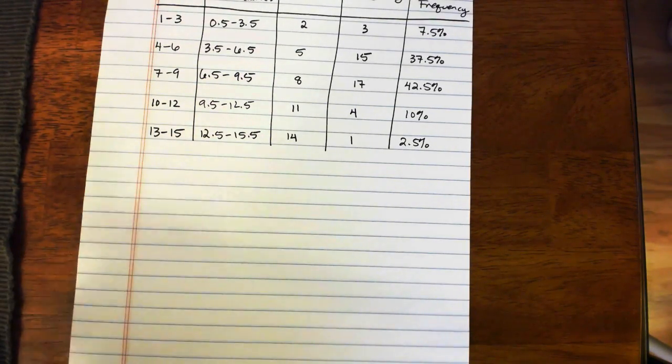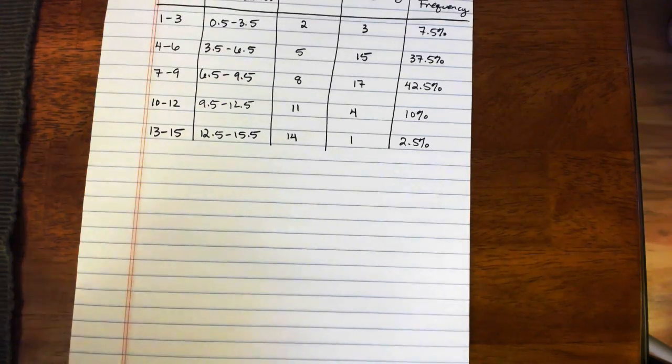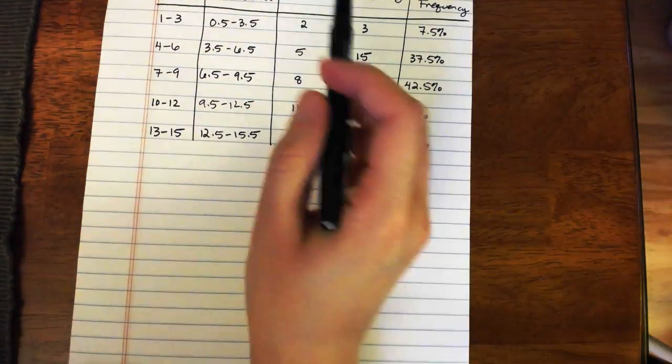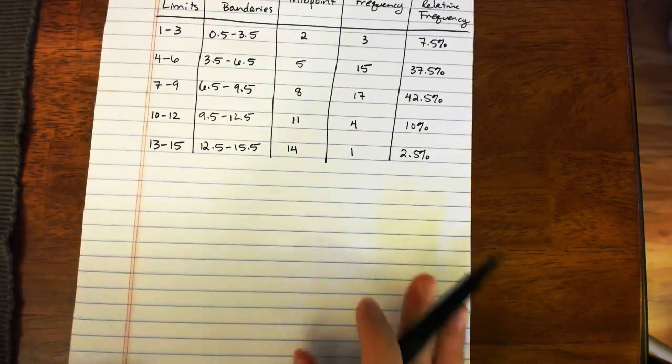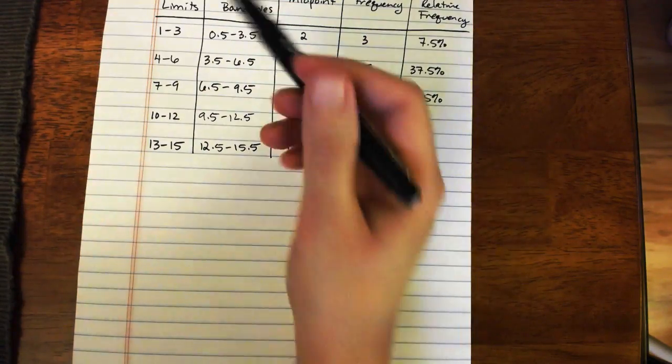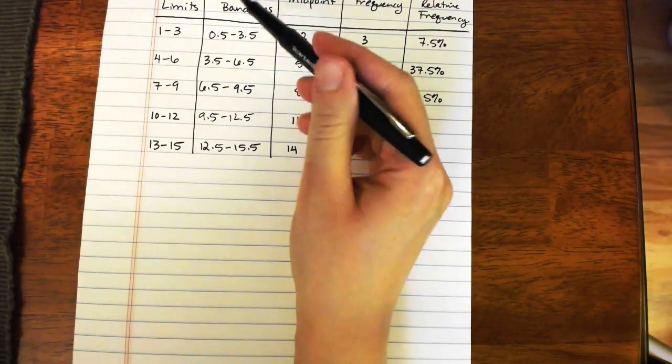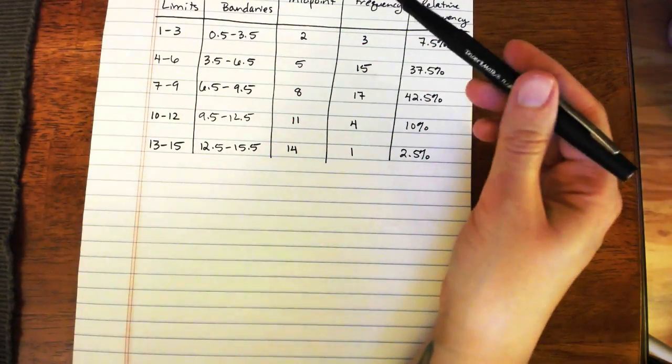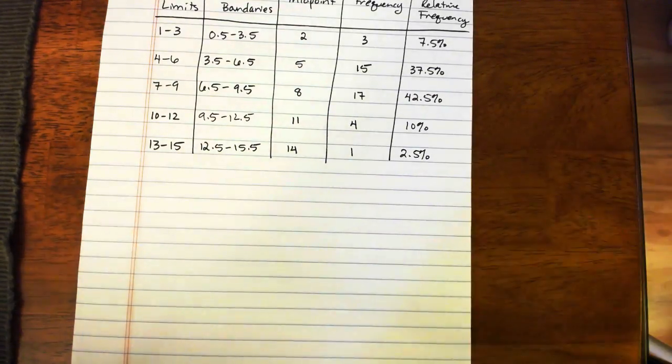In this video, we're going to take a look at converting a frequency table into a histogram. And this is the frequency table that we made in the last video. And here we had our class limits, class boundaries, midpoints, frequencies, and relative frequencies.